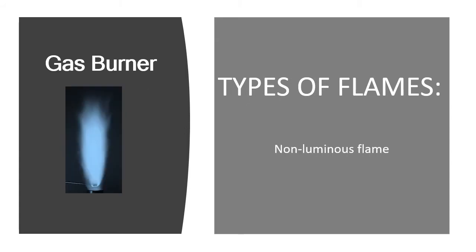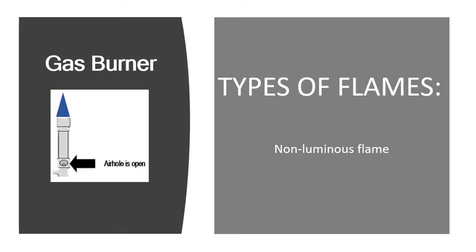The next type of flame is the non-luminous flame. It is not capable of producing light but can reflect light from another source. They are the ones that burn blue. This type of flame is steady, does not produce soot when in contact with another object, and it is hotter than the luminous flame. They are best for heating. This type of flame is produced when the air hole of the gas burner is open.